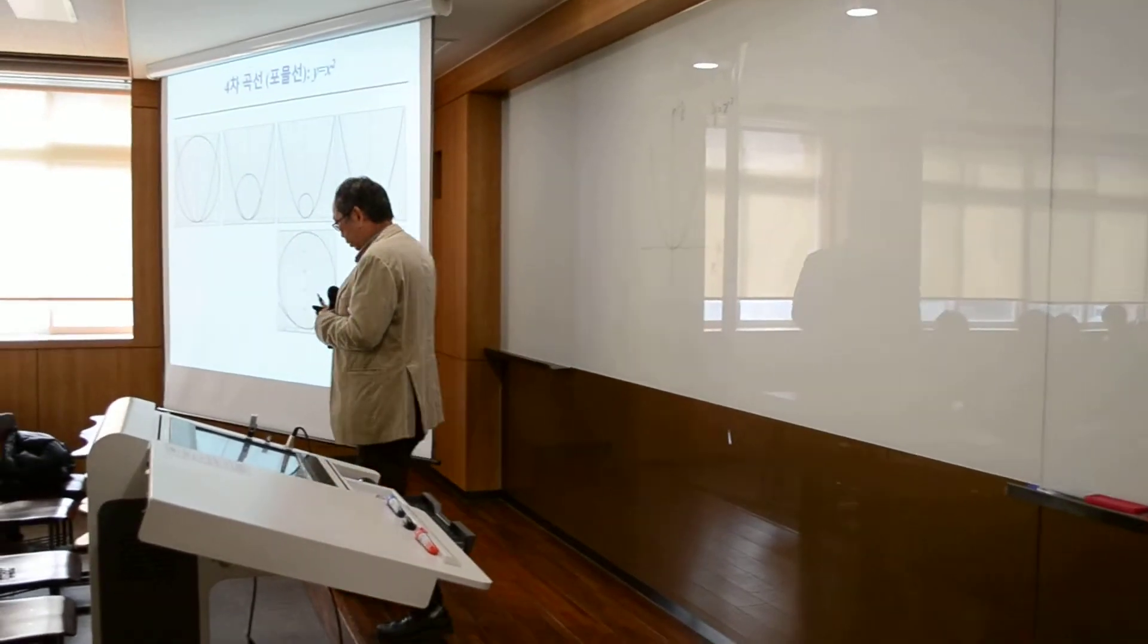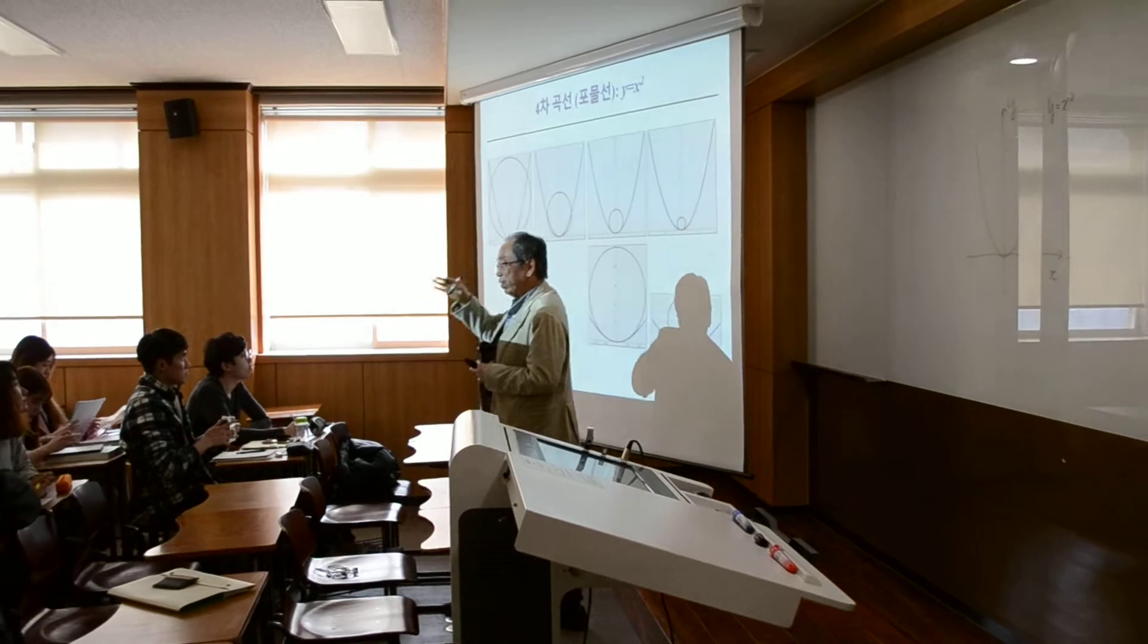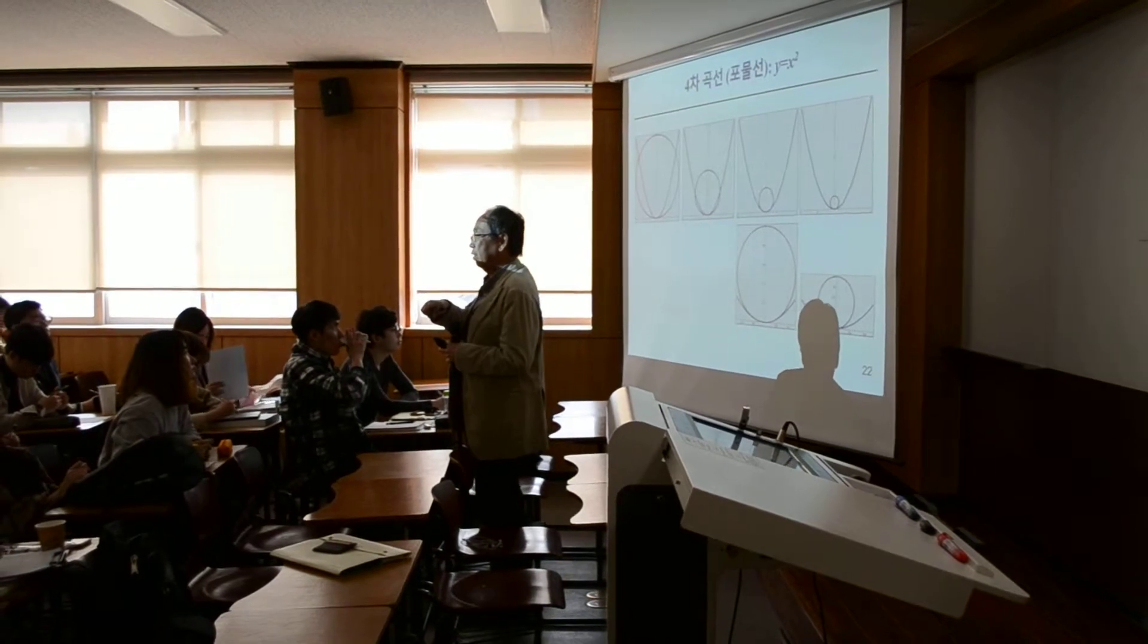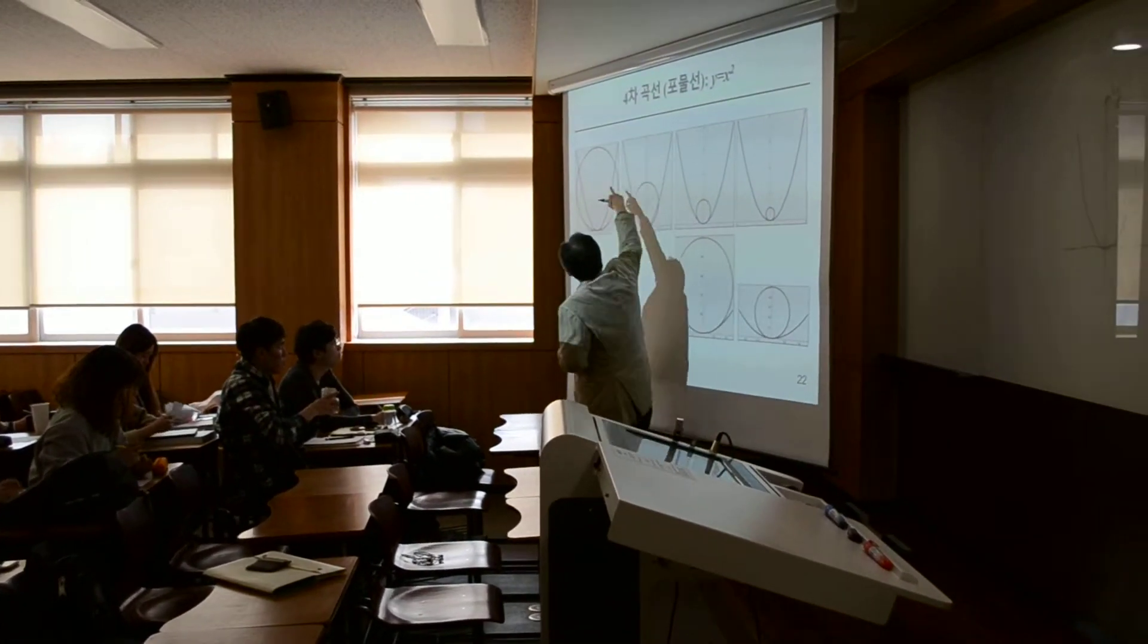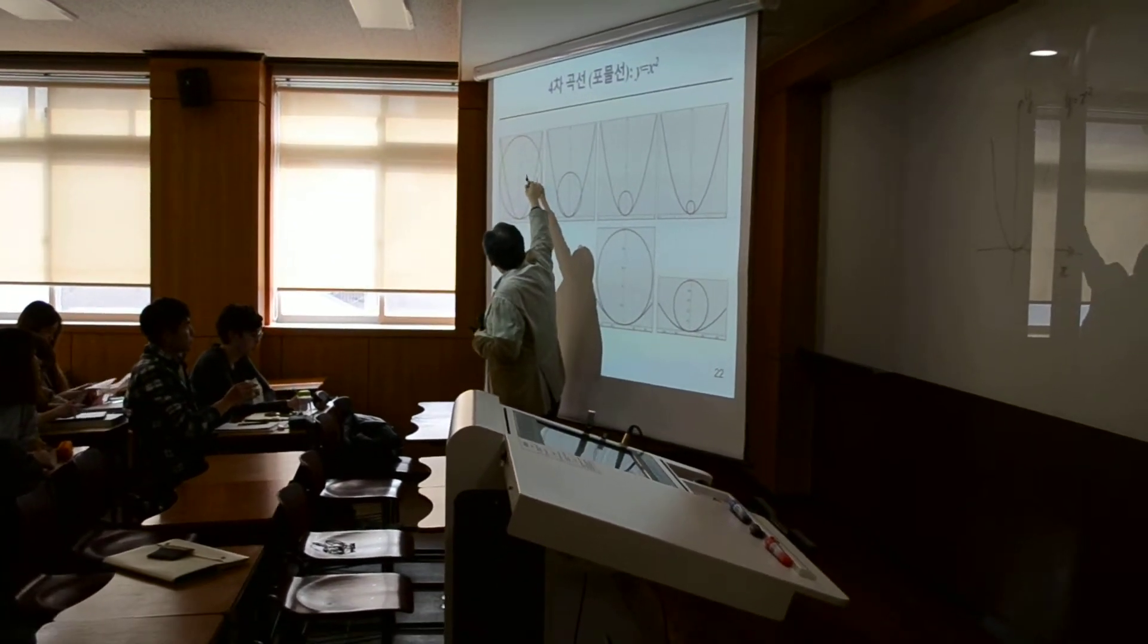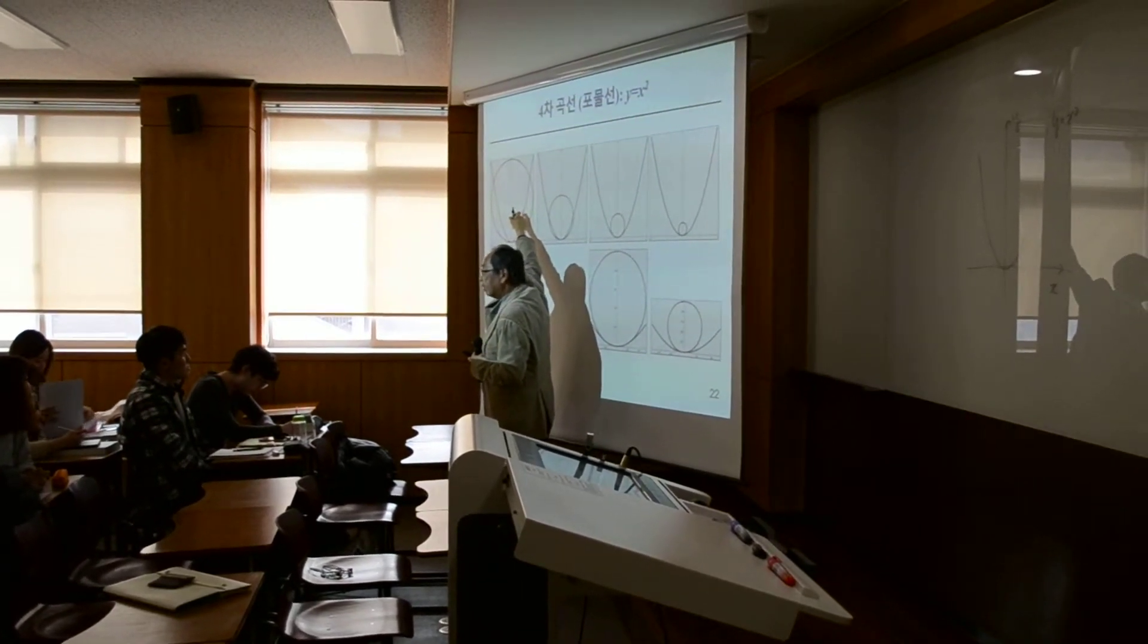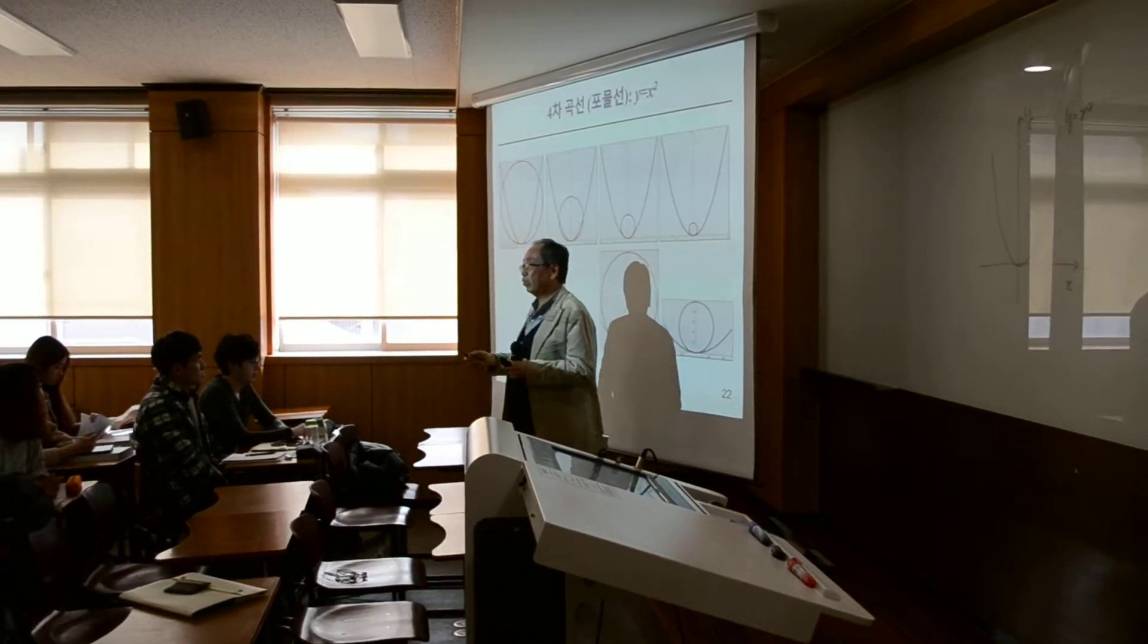So, you studied tangent lines. A tangent line is actually, if you have some graph or curve, it approximates at some point—approximates the curve with a line. That's a tangent, right? When you were a high school student, you studied tangent.